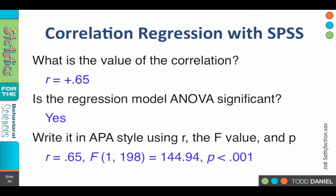Let's see if you remember this. We would include our R value of .65, F with 1 and 198 degrees of freedom equals 144.94 P less than .001. Great.